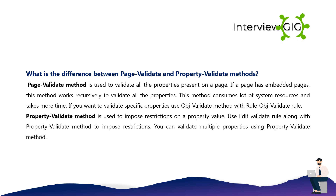What is the difference between page validate and property validate methods? Page validate method is used to validate all the properties present on a page. If a page has embedded pages, this method works recursively to validate all the properties. This method consumes a lot of system resources and takes more time. If you want to validate specific properties, use OBJ Validate method with rule-OBJ-validate rule. Property validate method is used to impose restrictions on a property value. Use an edit validate rule along with property validate method to impose restrictions. You can validate multiple properties using the property validate method.